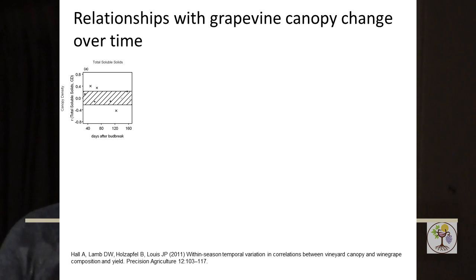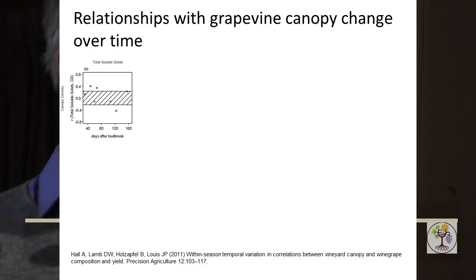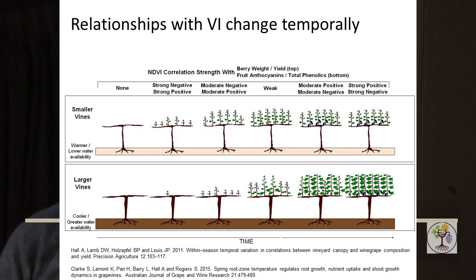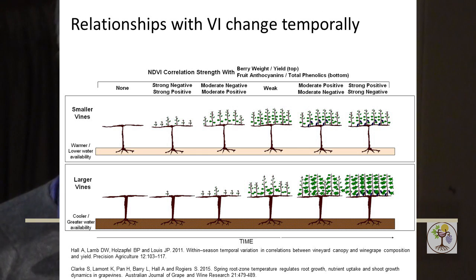One of the things we found in this particular vineyard was that the correlations could change over time depending upon when you took your imagery. This diagram shows the strength of correlation with different fruit and yield variables. I've got canopy density — basically the mean NDVI from those objects. Sometimes we saw a negative correlation early in the season with canopy, and then a positive correlation later in the season. If the point fell within the dashed lines, there wasn't a significant correlation. So depending on when in the season you take your imagery, it affects both the strength and the direction of the correlation with the fruit.